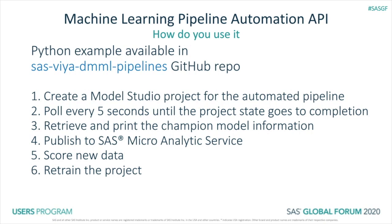First, it creates a Model Studio project for the automated pipeline. Next, it polls every five seconds to wait until the project state goes to completion. The project state initially starts in the pending state, and then it transitions to waiting, ready, modeling, constructing pipeline, running pipeline, and finally to the completed state. Once it's in that state, the next step is to retrieve and print the champion model information, including assessment statistics. Next, it publishes the champion model to the SAS Microanalytic Service, one of the destinations available for publishing. The fifth step is to score new data using the champion model. And finally, there's the step to retrain the project once new training data becomes available to you.